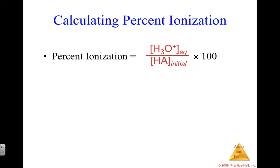Now we're moving on to calculating percent ionization. The first thing we need to learn is the definition: percent ionization is defined as our hydronium molarity at equilibrium divided by our initial acid molarity, times 100 to make it a percent.